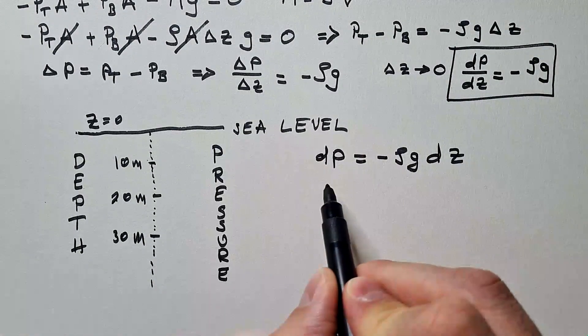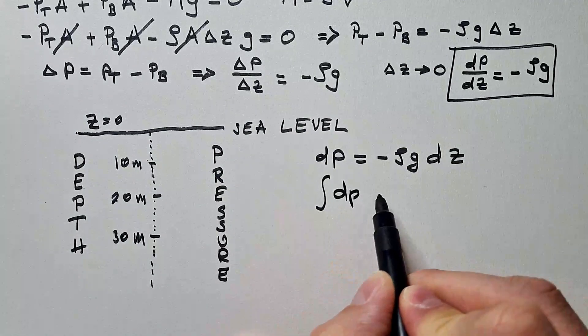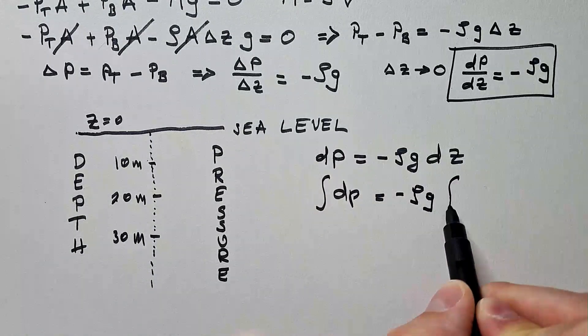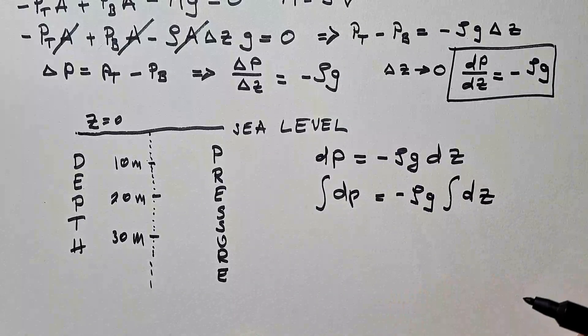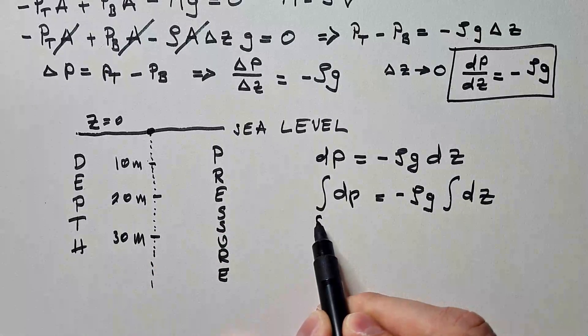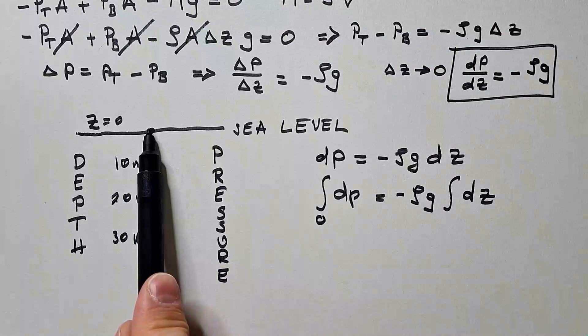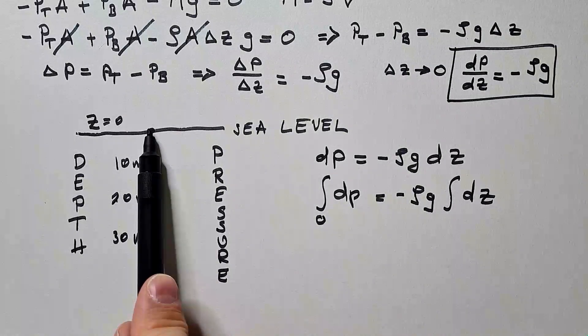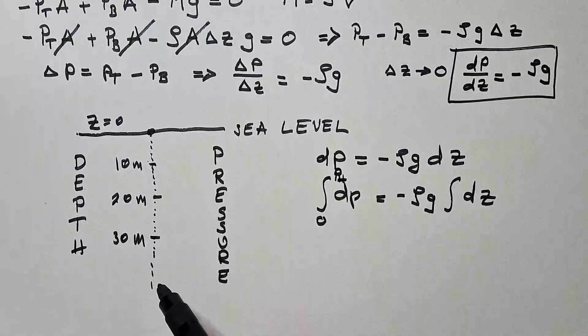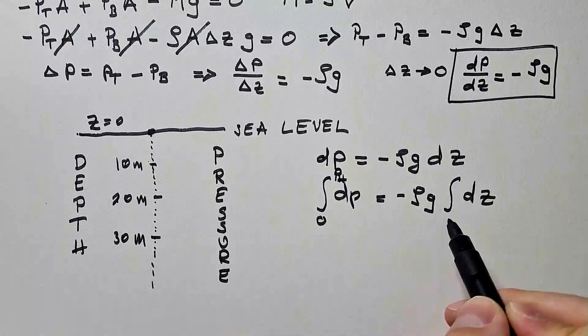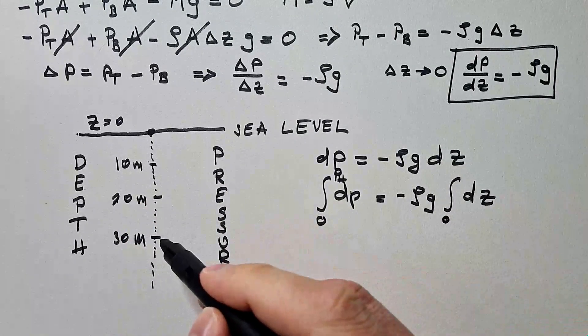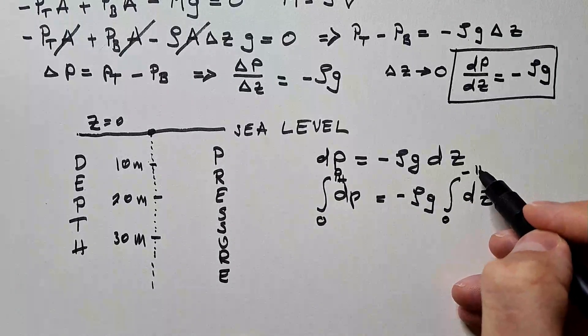Now I integrate, integral dP is, density is constant in water, so I can put it in front of the integral. And integral of dz. What are the limits of my integral? I go from the surface, where the pressure is zero, so I will reference pressure to the surface, where I will say the pressure of the water is zero, to pressure at some depth h below the surface. And the height at the surface is zero, and depth is minus h.